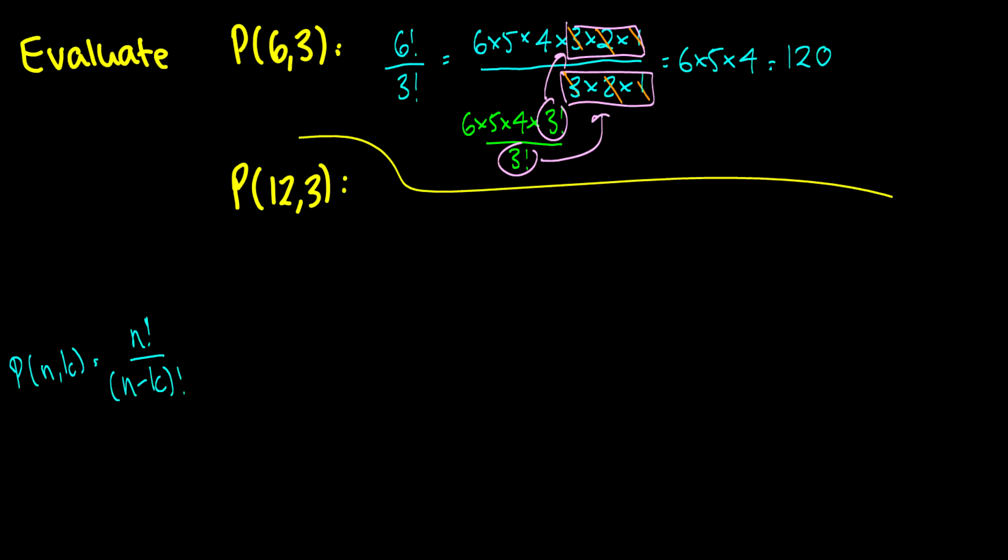Again, we just do the same concept. So, this is going to be 12 factorial over 12 minus 3, which is 9 factorial. So, when we expand this on the top here, we're going to get 12 times 11 times 10 times 9 factorial, all over 9 factorial. When the 9 factorials cancel, we get 12 times 11 times 10, which should be 1,320.